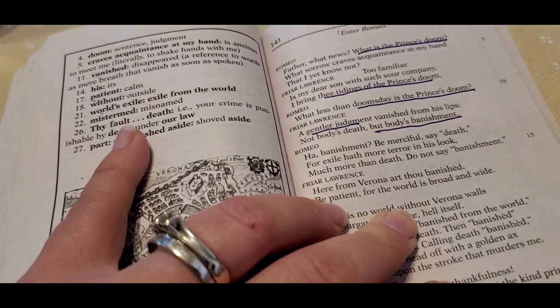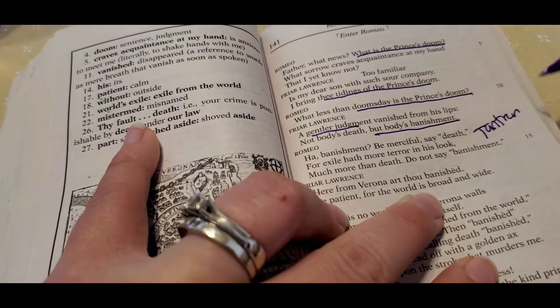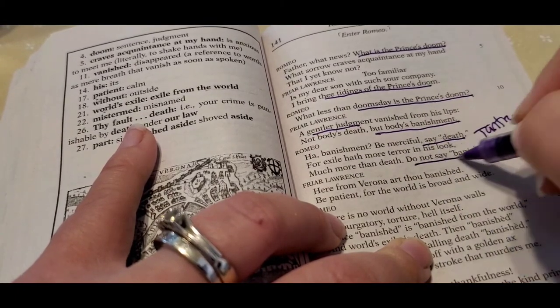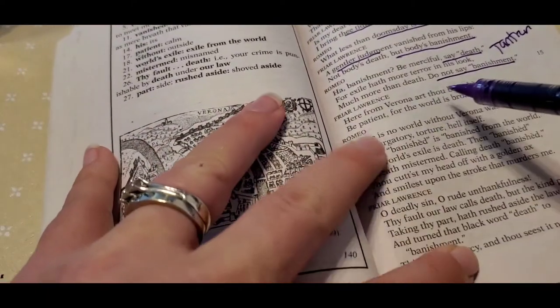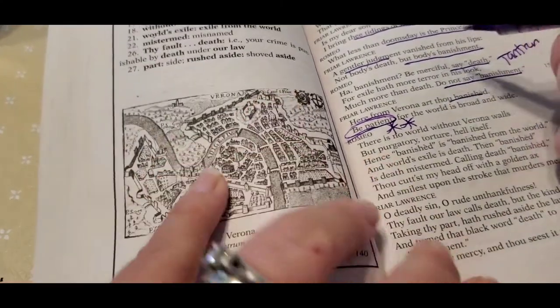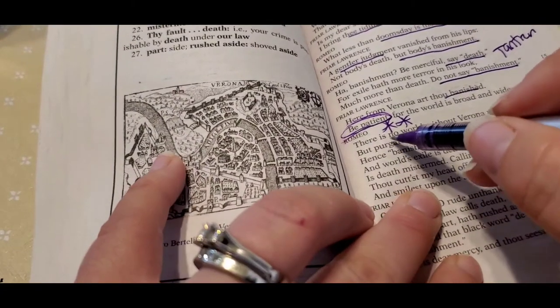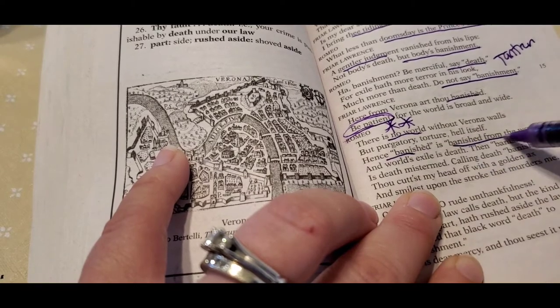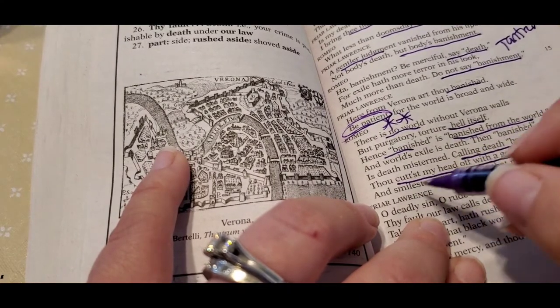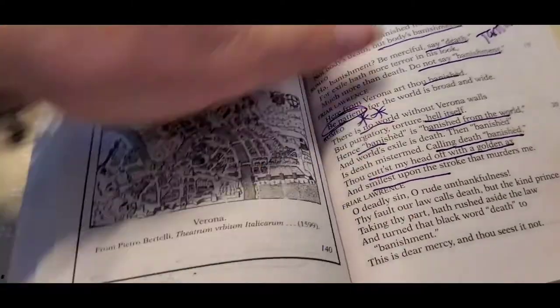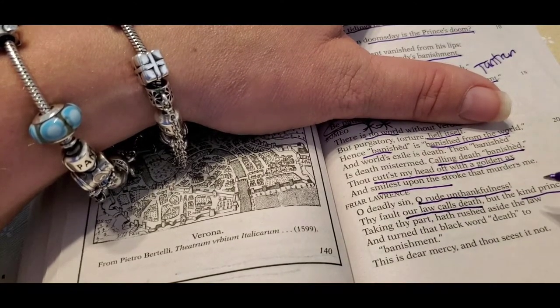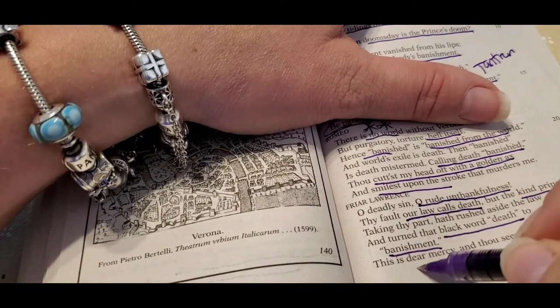And now Romeo throws a full out tantrum. Ha banishment. Be merciful. Say death. Just tell me I'm going to die for exile is more terror in his luck for much more than death. Do not say banishment. And he says here you're banished. Like be patient. Remember that whole, like, this is his tragic flaw. Be patient. This is a blessing. As he's saying, there's no world without Verona's walls. No, this is banished and I'm banished from the world. It's like hell itself. And you're calling death banishment. You cut my head off with a golden ax and smile upon me. And he's like, this is terrible.